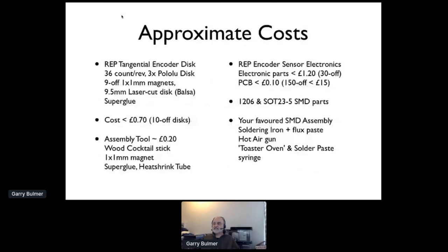Just to give you an insight into the approximate costs, the encoder discs 10 off for about 70p, the PCB and electronics are less than £1.30, and you need to use your own favorite SMD assembly technique. The assembly tool costs about 20p in parts.